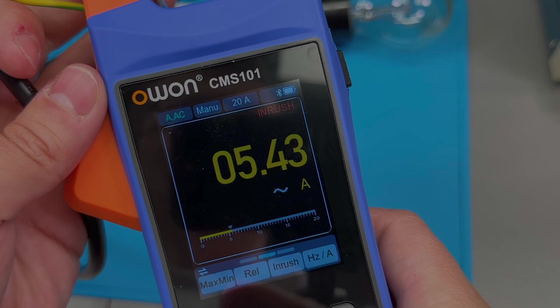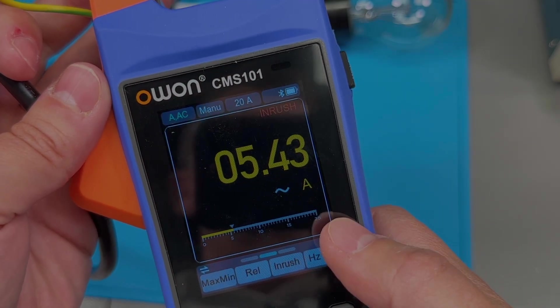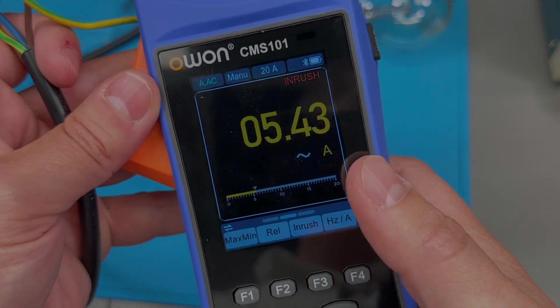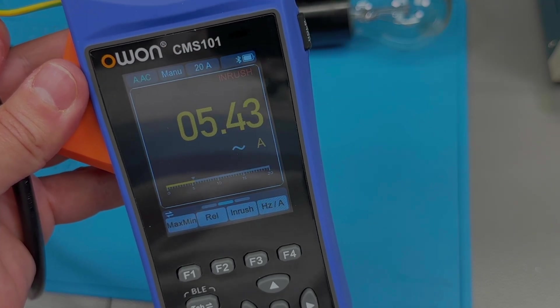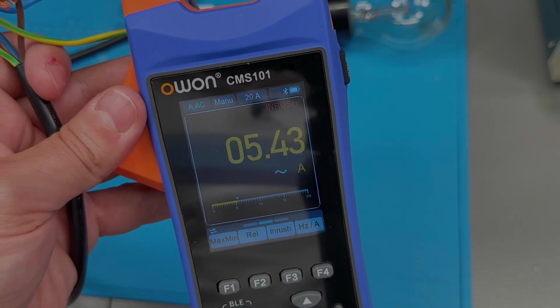I've repeated this test and the value is always 5.4 amps. So the functionality is there and it works as expected. And this is a very useful function to have on a clamp meter.